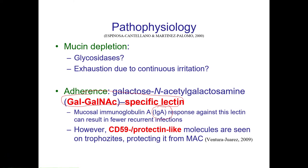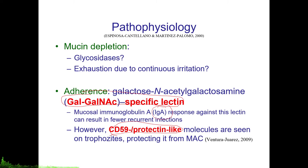The counter-argument of Entamoeba histolytica against mucosal IgA and the membrane attack complex is its possession of a CD59/protectin-like molecule, which protects it from the membrane attack complex. CD59 glycoprotein is also known as the membrane attack complex inhibitory protein, the membrane inhibitor of reactive lysis, or protectin — a protein that humans secrete to protect themselves. In this case, Entamoeba histolytica uses a similar molecule to protect itself against human membrane attack complexes.